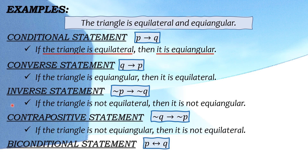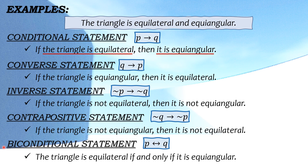And the last is the biconditional statement. Yung biconditional statement, yung ating given statement ay lalagyan lang natin ng words na 'if and only if'. So ang ating biconditional statement ay magiging: 'The triangle is equilateral if and only if it is equiangular.' Yung word na 'and' pinalitan natin ng 'if and only if', and meron din siyang conclusion na 'it is equiangular', katulad ng nasa conditional statement.